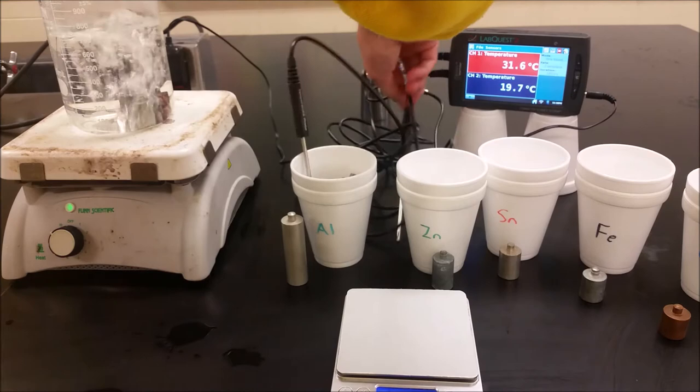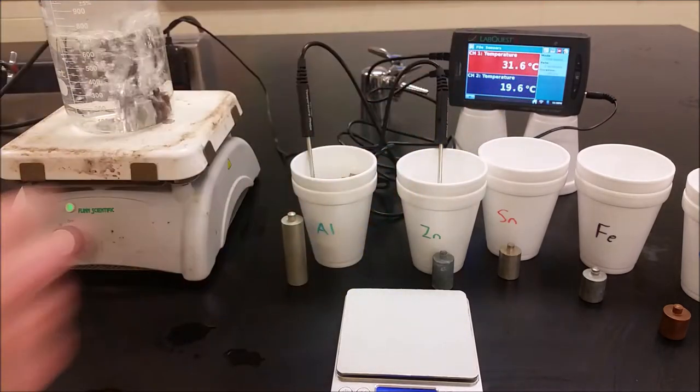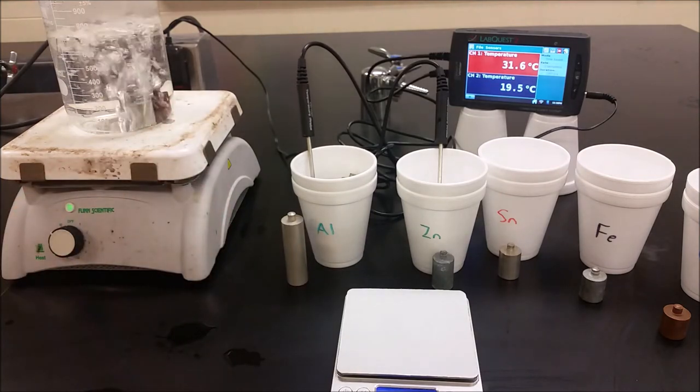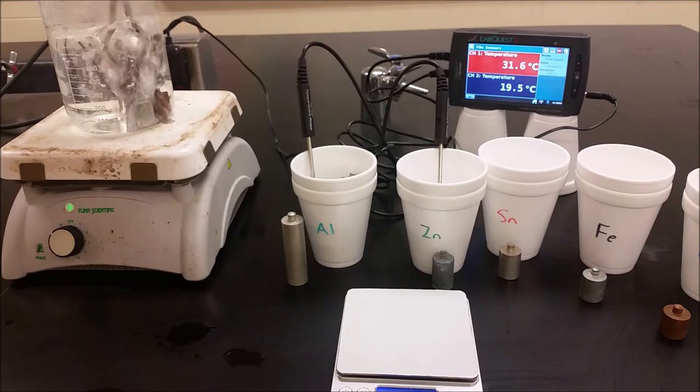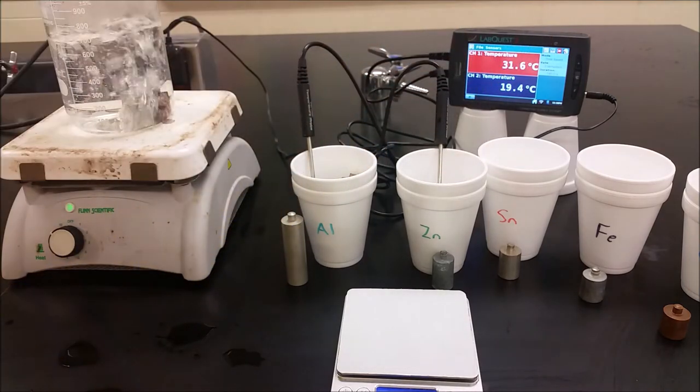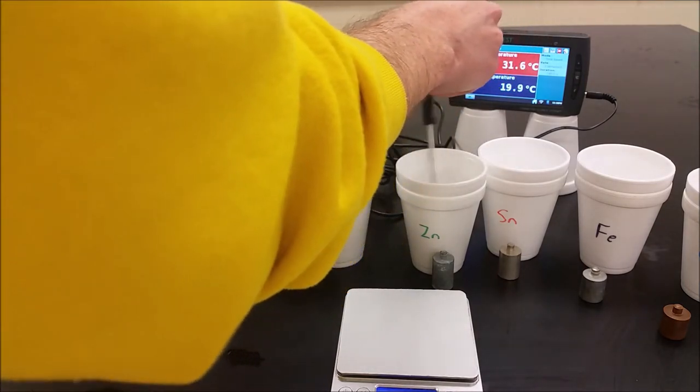So next, we're going to do the same thing with the zinc metal. So we're going to take this zinc metal, which is the second largest one, out of here, carefully, and put that in there. And this time, we're starting a little lower than that 19.8.